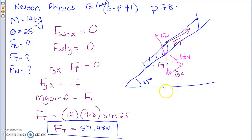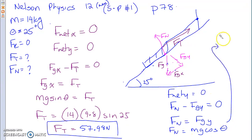Now the next question is, what is FN? Well, in the Y direction, we said Fnet Y equals to zero. In the Y direction there are two forces: FN minus FGY, which equals to zero. Therefore your FN equals to your FGY. Your FN equals to mg cos θ. FN equals 14 times 9.8 times cos of 25. What do you get for your FN? 124.35 newtons.